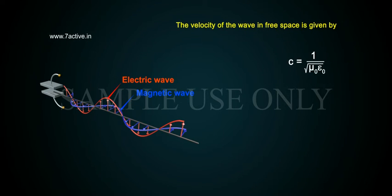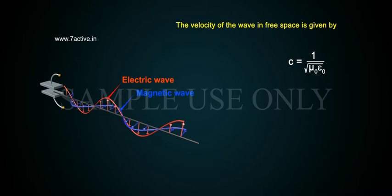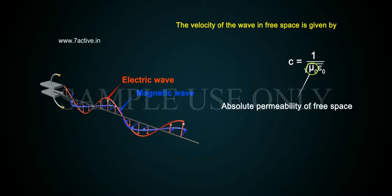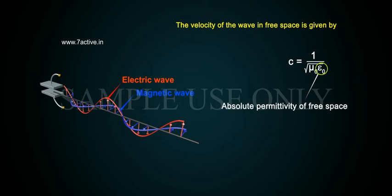Point 4: The velocity of the wave in free space is given by C equals 1 over the square root of mu0 epsilon0, where mu0 is the absolute permeability of free space and epsilon0 is the absolute permittivity of free space.